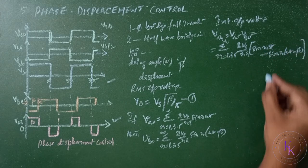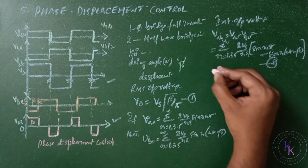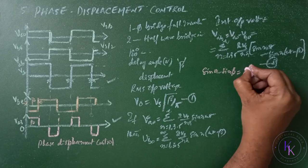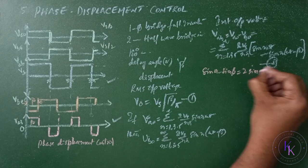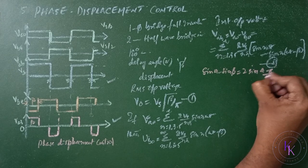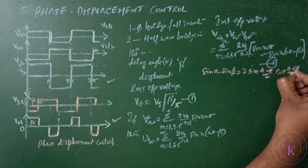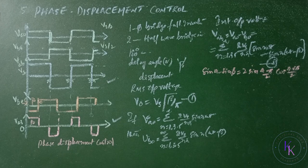Let this be equation number two. Since sine a minus sine b equals 2 sine of a minus b by 2 times cosine of a plus b by 2, now by using this formula if we simplify this,